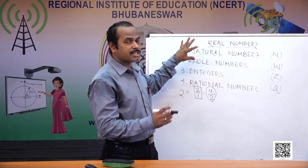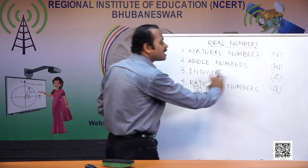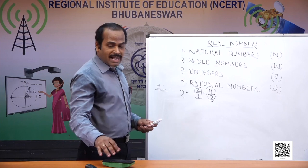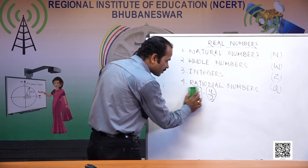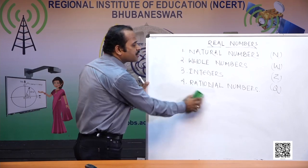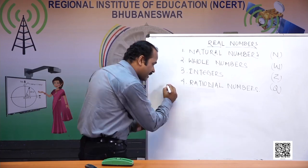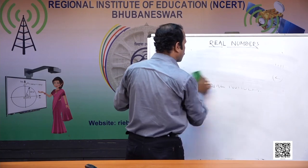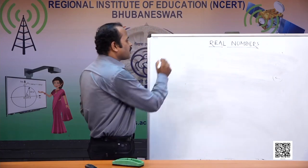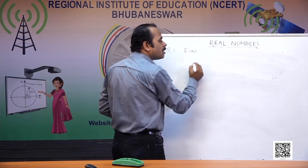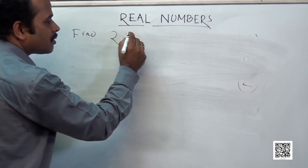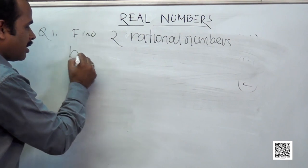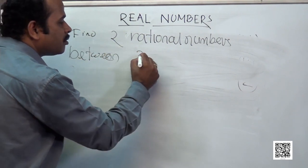Real numbers are not finished with rational numbers — every number cannot be represented as a rational number, and we should go beyond rational numbers. We will see what more exists in rational numbers later. Now let me give you a question: find two rational numbers between 3 and 4.